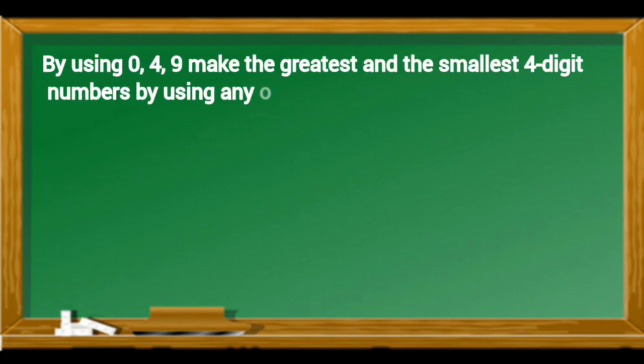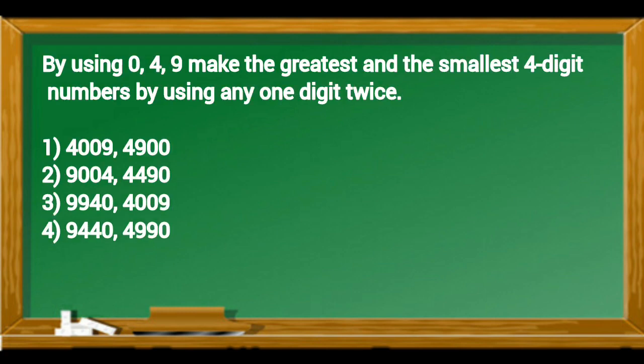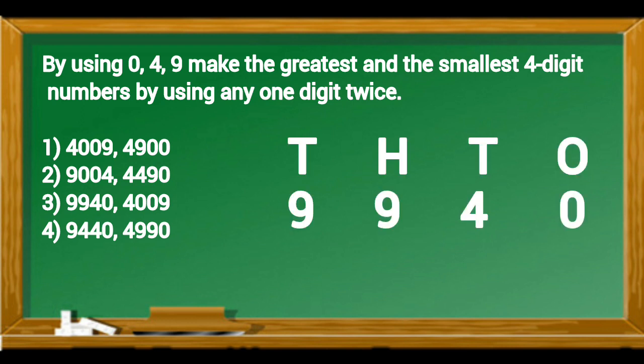By using 0, 4, 9, make the greatest and smallest 4-digit numbers by using any one digit twice. By using number system, the greatest number is formed 9,940. We know a number cannot begin with digit 0. The smallest number is formed as 4,009. According to this, third option is the correct option.